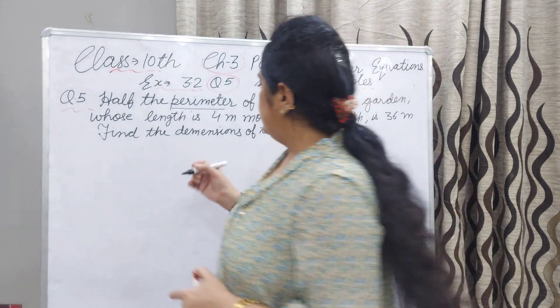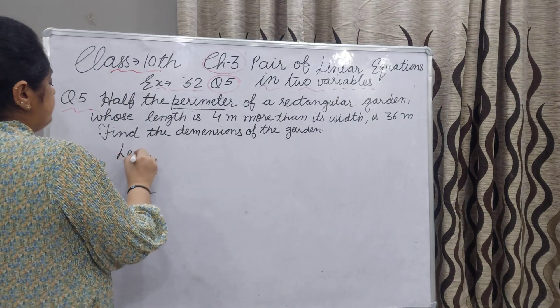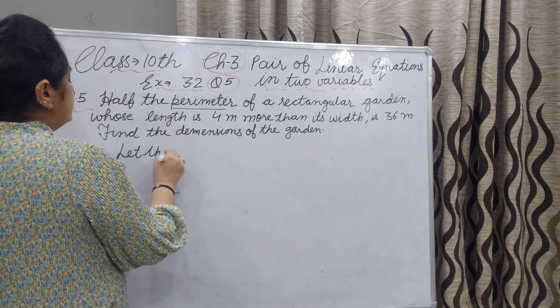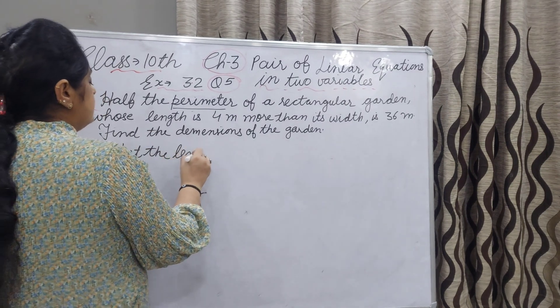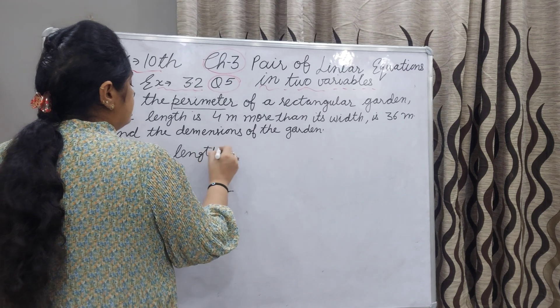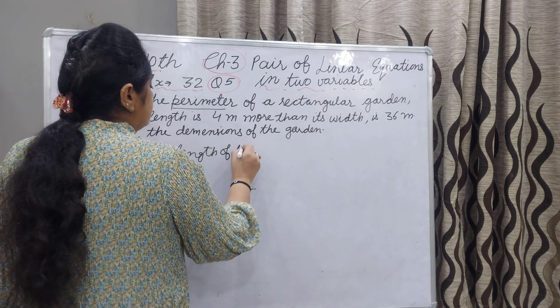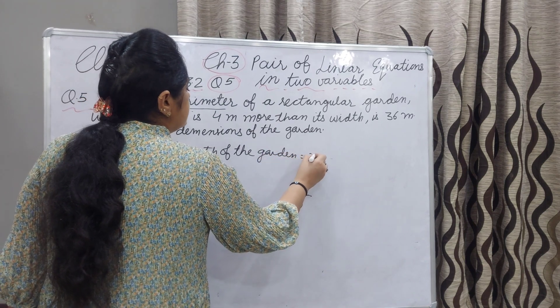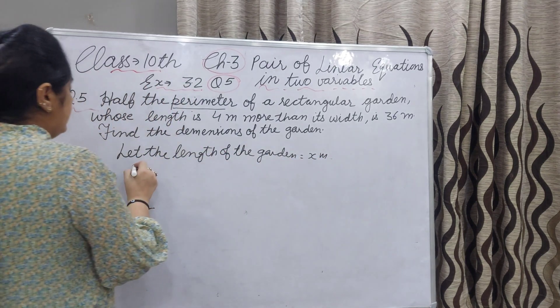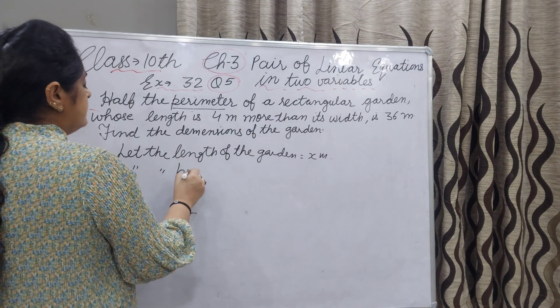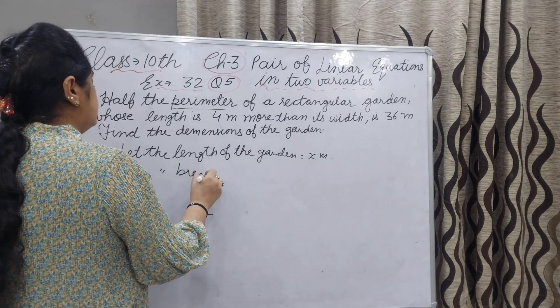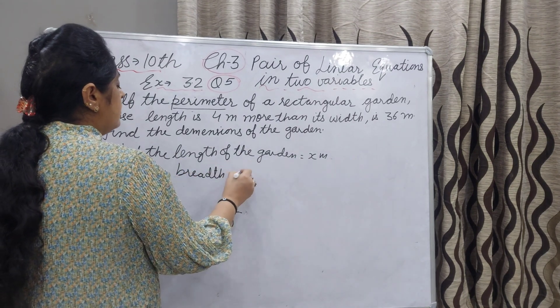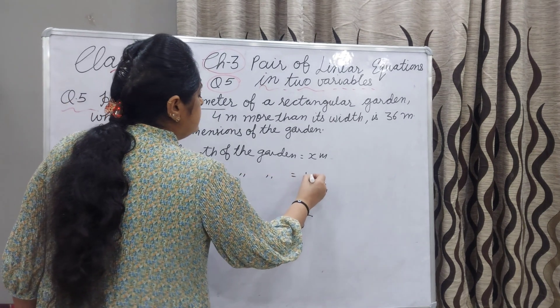First we will let the length of the garden be x meters, and let the breadth of the garden be y meters.